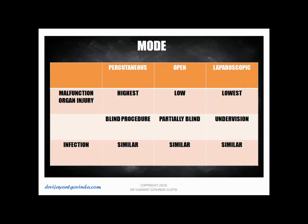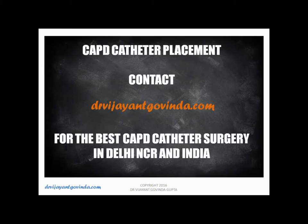There are three ways to place a CAPD catheter. The percutaneous method is now largely outdated with the highest rates of complication and malfunction, as it is essentially a blind procedure. The other two methods are open and laparoscopic. The laparoscopic method is the most preferred worldwide because it has the lowest rates of injury and malfunction, since the entire procedure is done under excellent vision. Dr. Vijayant Govinda is a specialist in CAPD catheter placement.